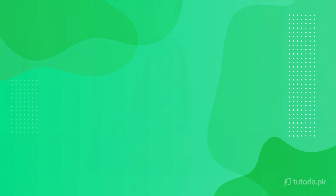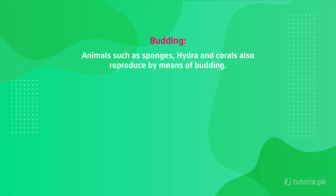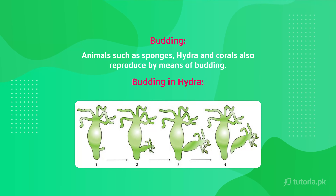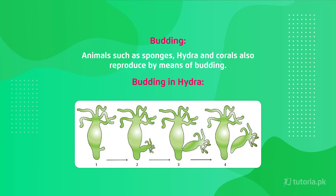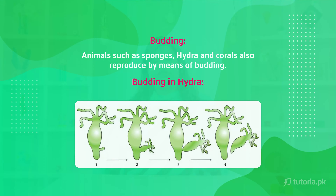Another example of budding is an organism called Hydra. Sponges and corals also use the budding method to reproduce. Hydra has a cylindrical body with tentacles. The parent body starts to develop a bud at its base, and that bud matures into an independent organism, receiving all the genetic material and cytoplasm from the parent.